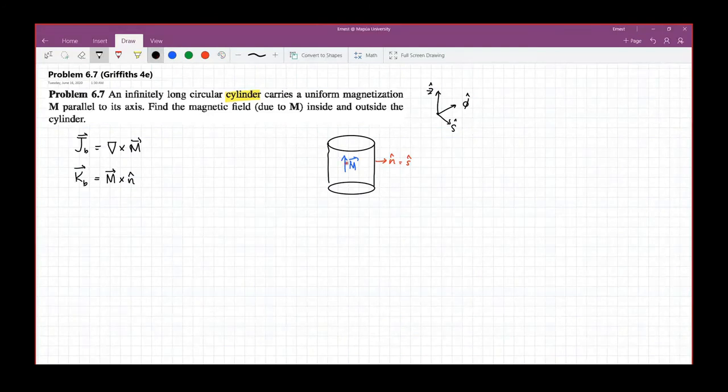So that means the curl of m, because m is uniform, that means this is a constant. The curl of a constant is zero. So in this case, for this kind of system where you have a uniform magnetization, there is no bound current within the volume.